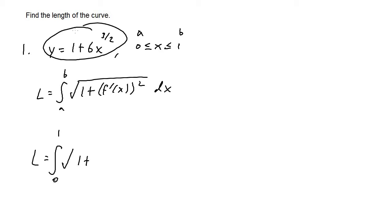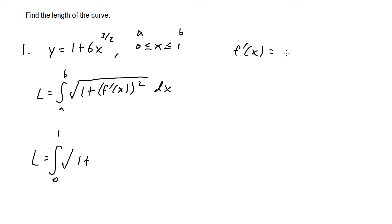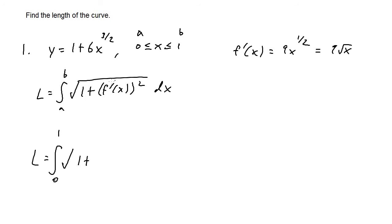If y equals 1 plus 6x to the 3 halves, then f prime of x equals — the derivative of 1 is 0, and for 6x to the 3 halves we use the power rule to get 18 over 2, which is 9, times x to the 1 half, or 9 times the square root of x. Squaring that gives 81x. So we have the square root of 1 plus 81x, times dx.